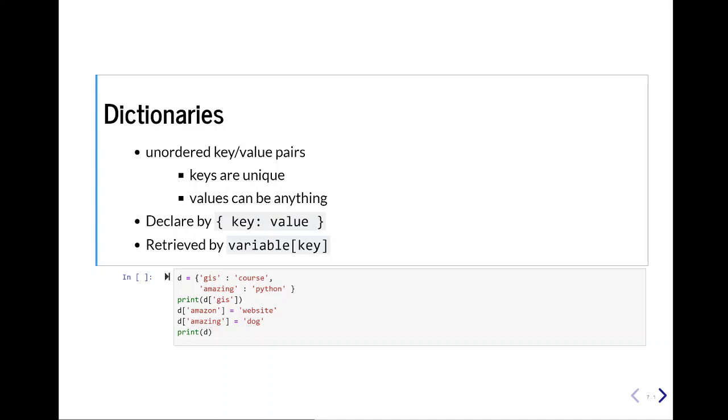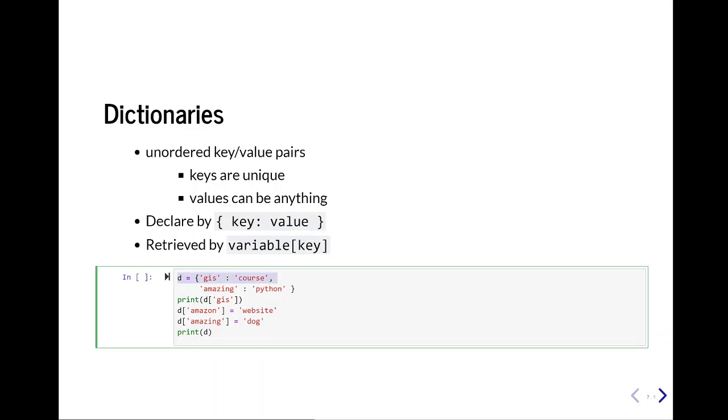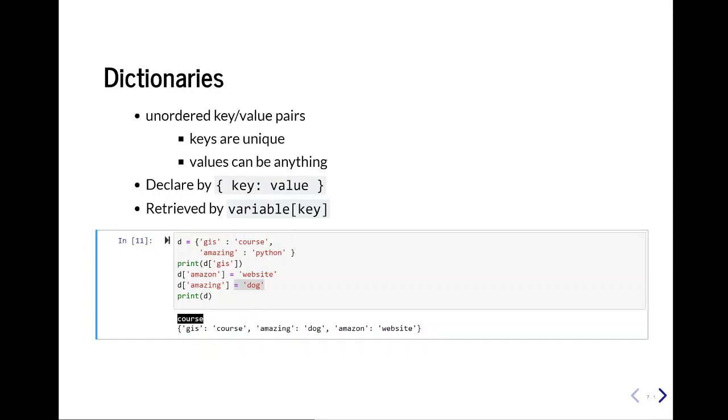We retrieve the value by passing in the key in square brackets. So I'm going to declare a dictionary with two keys of GIS and amazing, with the values of course and Python. I'm then going to retrieve my value by doing D GIS, and it should print out course. I'm then going to add a new key by doing D square bracket, my new key. We're going to say equals website. So a single equal sign. Remember, that means assignment. And then we're going to update the amazing variable and assign it from Python to dog, and let's print out the final result. And what we can see is that first we print out the value as we expected for GIS. Then we added in our Amazon value, website, and we updated amazing from Python to dog.